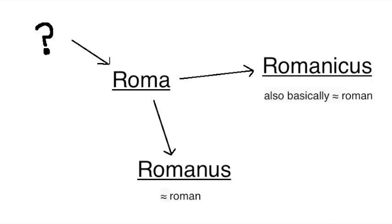Wherever it came from, they derived more words from the name of their city, like the word Romanus, which meant Roman or having to do with Rome, and Romanicus, which meant something like in the style of Rome.